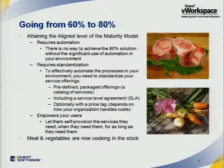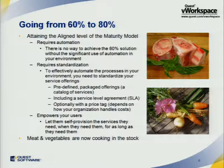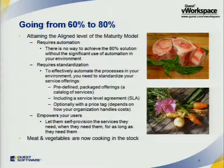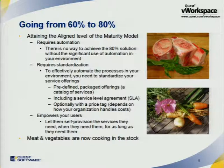The service catalog also empowers your users. Users can come in, make a selection, and say they want a service available starting July 1st through September 30th with specific performance and data protection characteristics — just sign up on a web page and it's done. During that empowering of the users, you're taking a burden off of your IT staff, so they're no longer required to manually provision systems. That's all handled via your automation process, freeing up your IT staff.